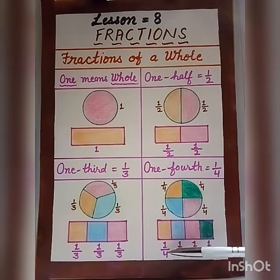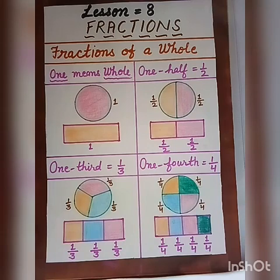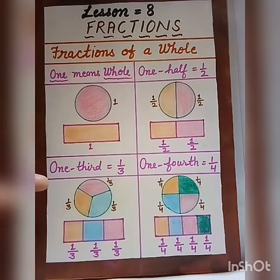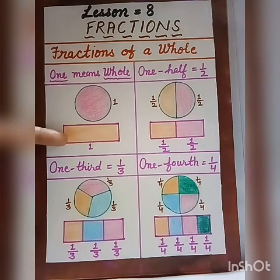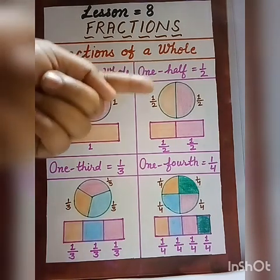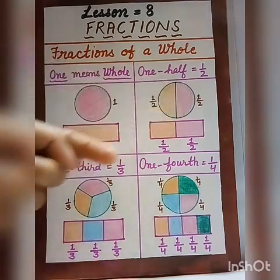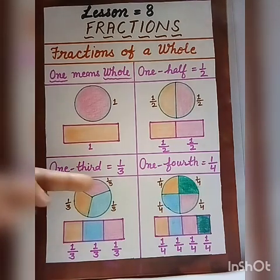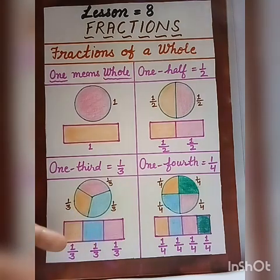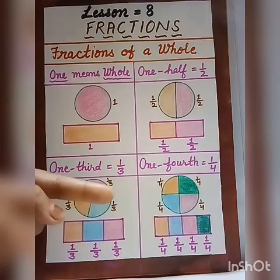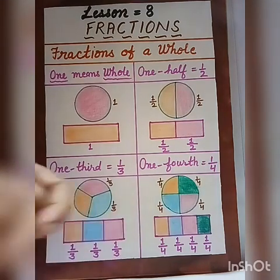Four quarters make a whole - when we add one by four, four times, we get one. Students, what are you observing in these figures? The first is a complete circle and a complete rectangle. In the next figure there are two equal parts of a circle. In the next figure there are three equal parts of a circle and rectangle.